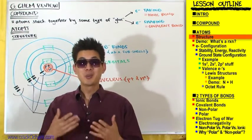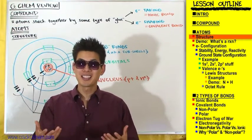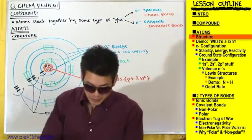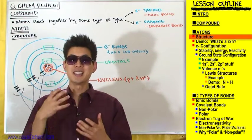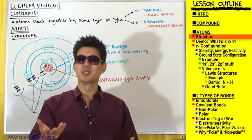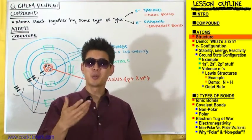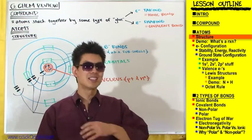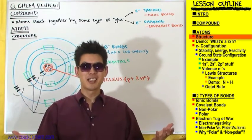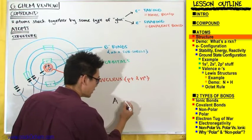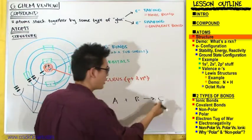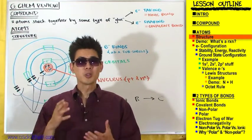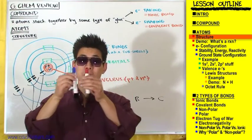We talked a lot about electrons because electrons are so important in chemistry. Electrons are the glue that can stick atoms together to form compounds. But more broadly, electrons are the entire reason why reactions happen. What is a reaction? All a reaction boils down to is bonds being made and bonds being broken. How you make bonds is by sticking electrons in between two atoms. How you break bonds is by removing those electrons to separate those atoms.